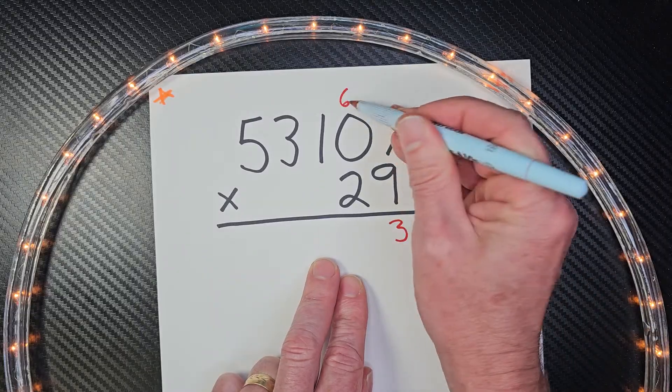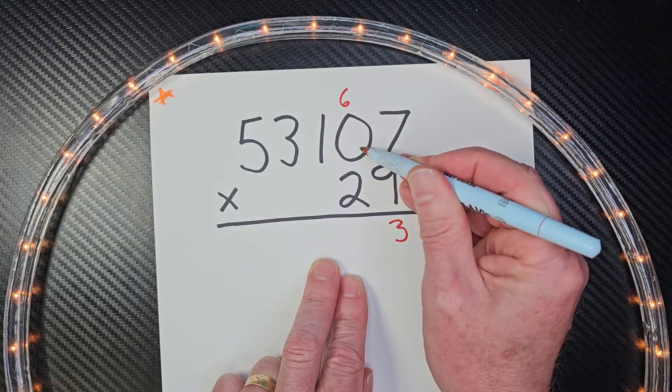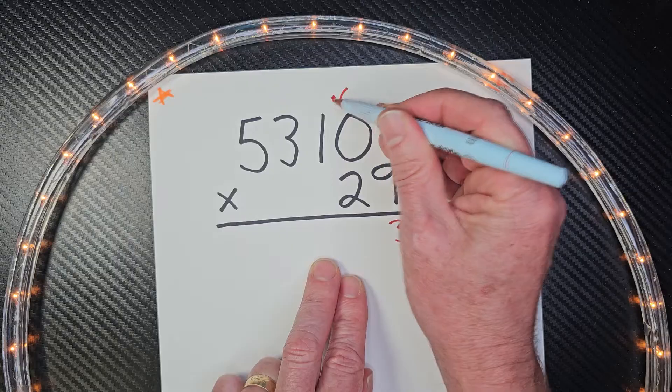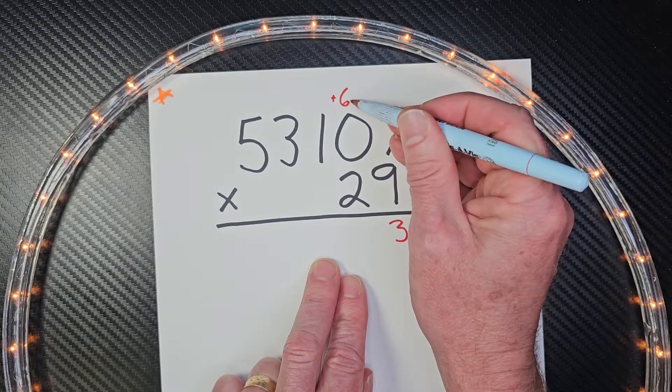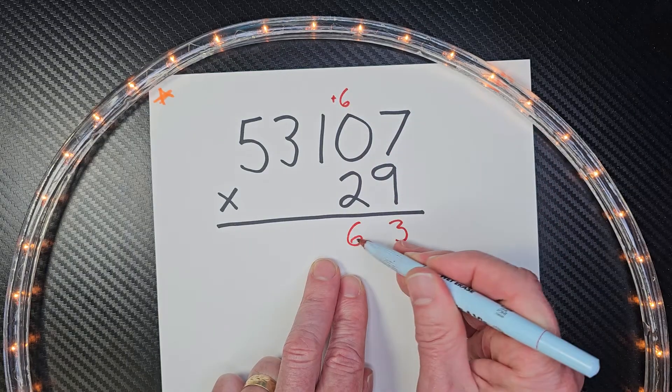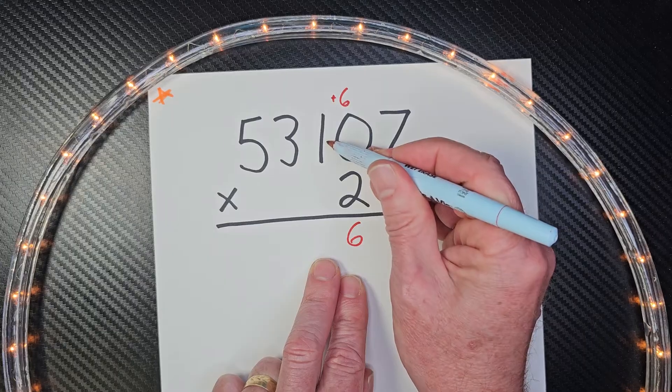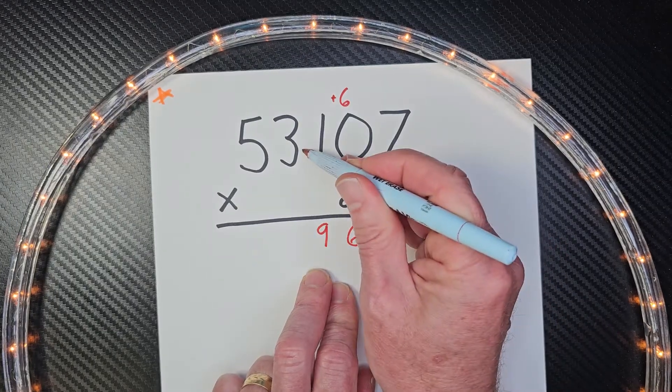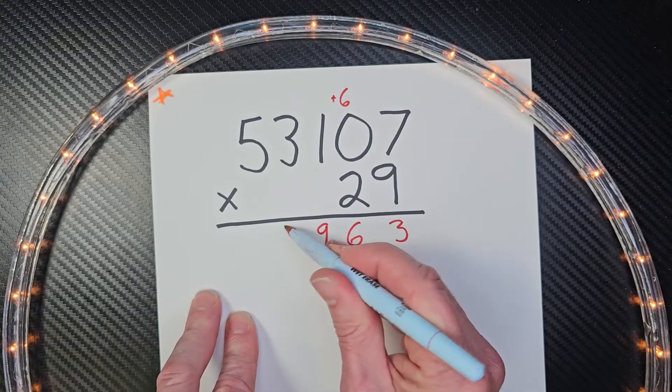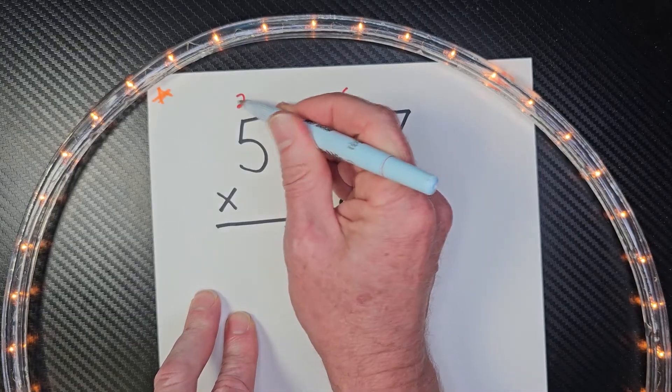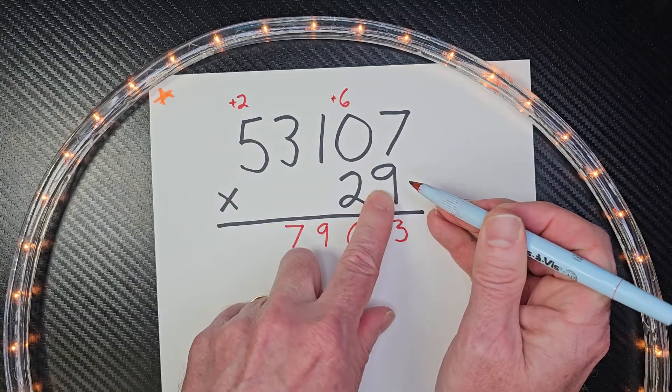I put the three right here and put the six up there. Nine times zero is zero, plus the six—don't forget about that six—bring that right straight down here. Nine times one is nine. Nine times three is 27, so I put the seven right here, carry the two, we're going to add that.